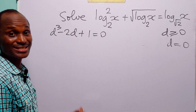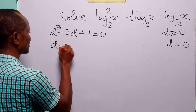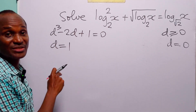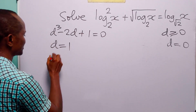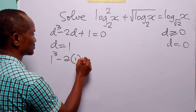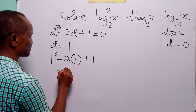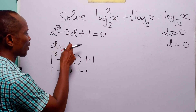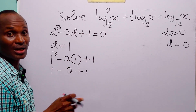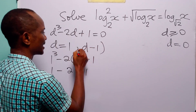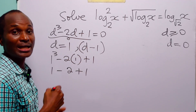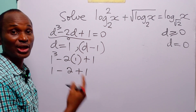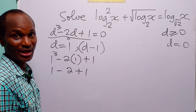To solve this cubic equation, let us use the trial and error method. Let us see if d equals 1 satisfies it. Substituting 1 into the left-hand side: 1 cubed minus 2 times 1 plus 1 equals 1 minus 2 plus 1 equals 0. So d equals 1 satisfies the cubic equation, and hence d minus 1 is a factor. If we divide d cubed minus 2d plus 1 by d minus 1, we get the other quadratic factor.